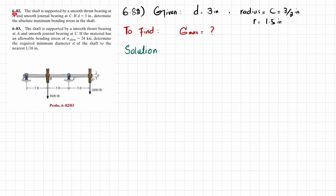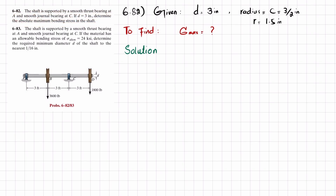Welcome back. Problem 6-82. The shaft is supported by a smooth thrust bearing at A and a smooth general bearing at C. If the diameter is three inches, determine the absolute maximum bending stress in the shaft. There is a loading of 3600 pounds at B and 1800 pounds at C, and the diameter is given as three inches.